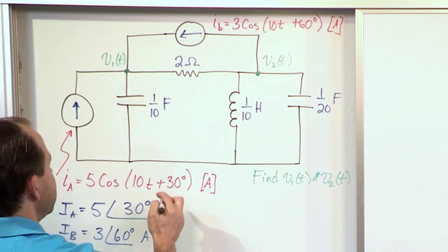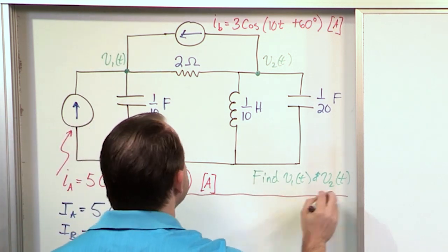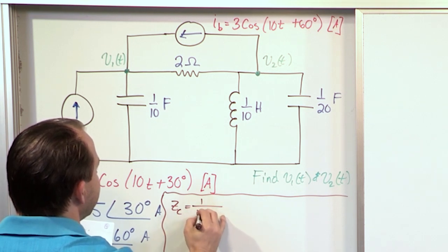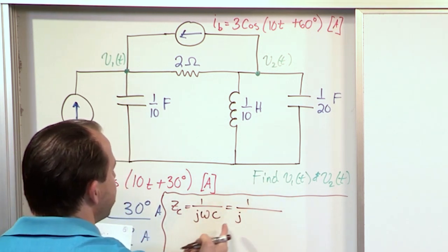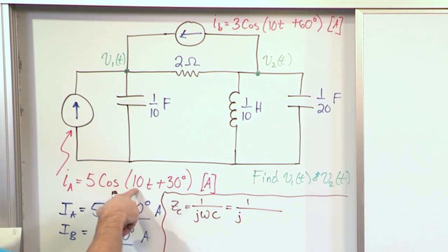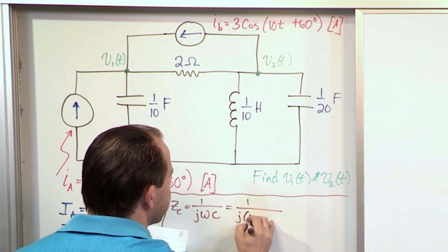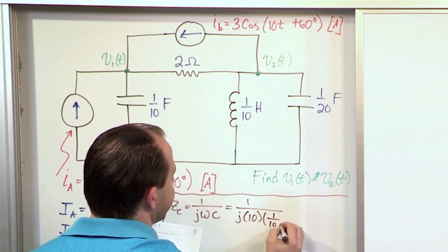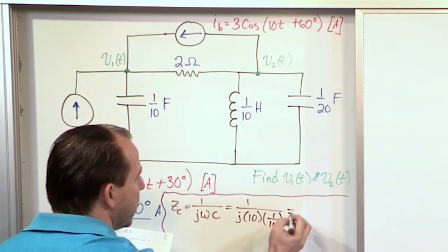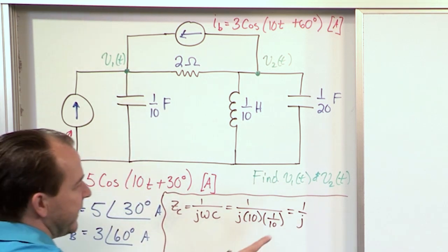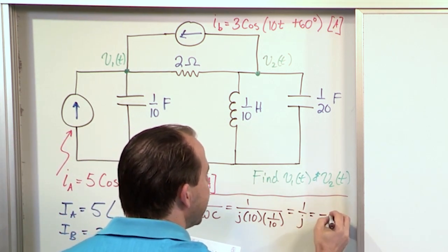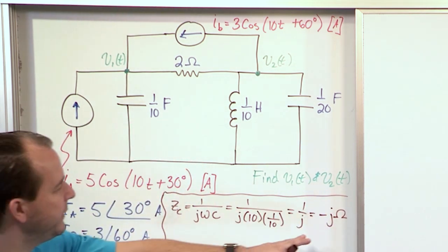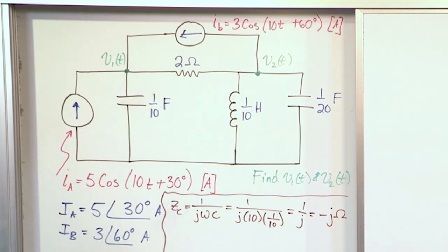Now we calculate the impedances. The impedance of capacitor C1 is 1/(jωC). With ω = 10 rad/s and C = 1/10, we get 1/(j·10·(1/10)) = 1/j. Moving j from the denominator to the numerator makes it negative, so Z_C1 = −j ohms. The impedance of a capacitor should be negative imaginary, which checks out.